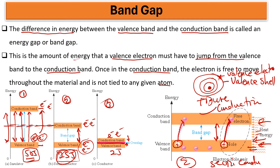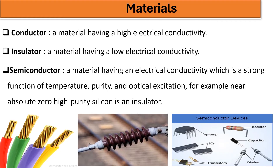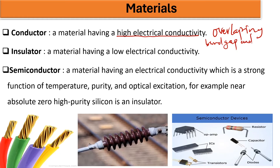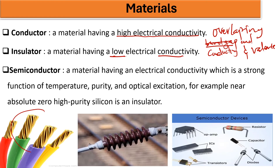We can also talk about the materials. The conductor has high electrical conductivity because of the overlapping — the overlapping of the conducting band and the valence band, or it has almost no band gap. The insulator has low electrical conductivity because there is a high or large band gap. We can see copper as a conductor, an insulator, and semiconductors as examples.